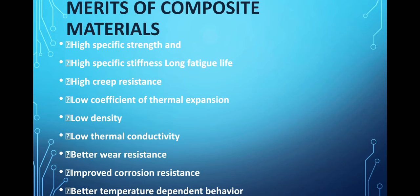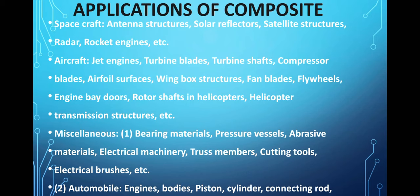Applications of composite materials include: spacecraft — antenna structures, solar reflectors, satellite structures; radar and rocket engines; aircraft — jet engines, turbine blades, turbine components; helicopter rotor shafts and transmission structures; bearing materials; pressure vessels; abrasive materials; cutting tools; electrical buses; and automobile components like engine body, pistons, and connecting rods.